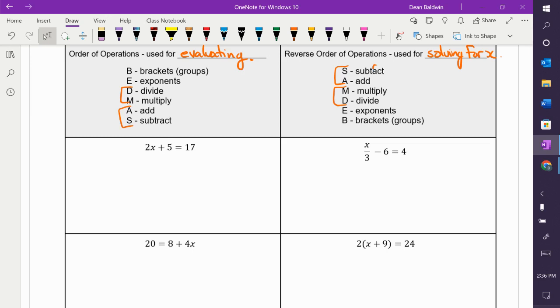Order of SAMDEB, order of algebra, I don't know what we're going to call it, says we do addition and subtraction first. So, is there anything in there being added or subtracted? The 5, right?